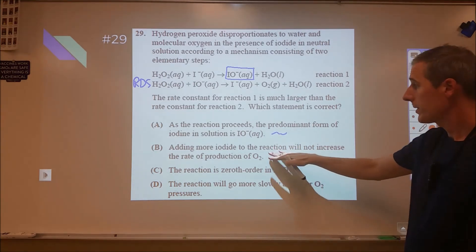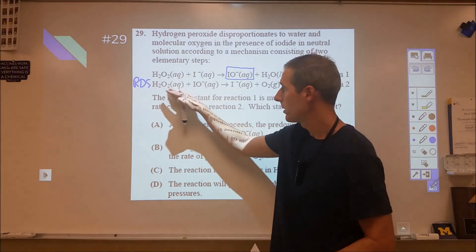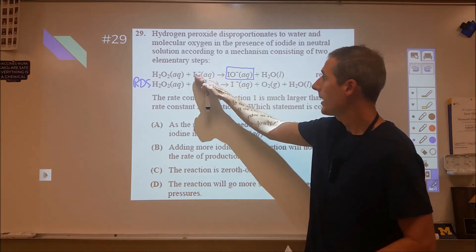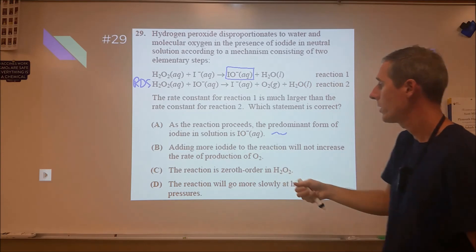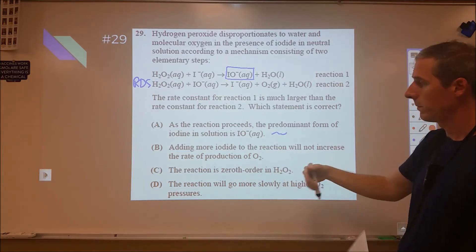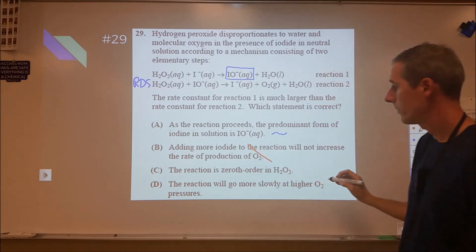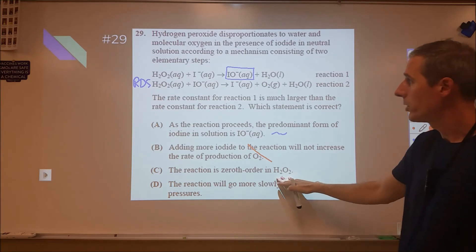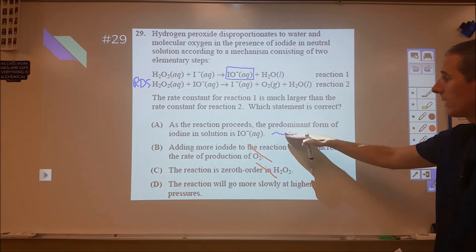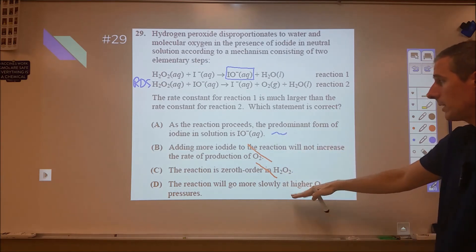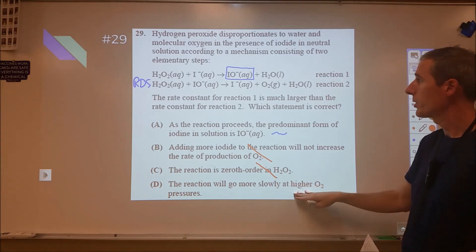So in part B, it says adding more iodide will not increase the rate of production of O2. Now on the one hand, there is no iodide present in the rate determining step. But on the other hand, the iodide is going to react with this very quickly and produce more hypoiodide and therefore increase that concentration. So this will increase the concentration of the rate determining step and therefore will increase the rate of production. This is not correct. And then the reaction is zero order in H2O2 since the peroxide is present in the rate determining step. We know that's incorrect.